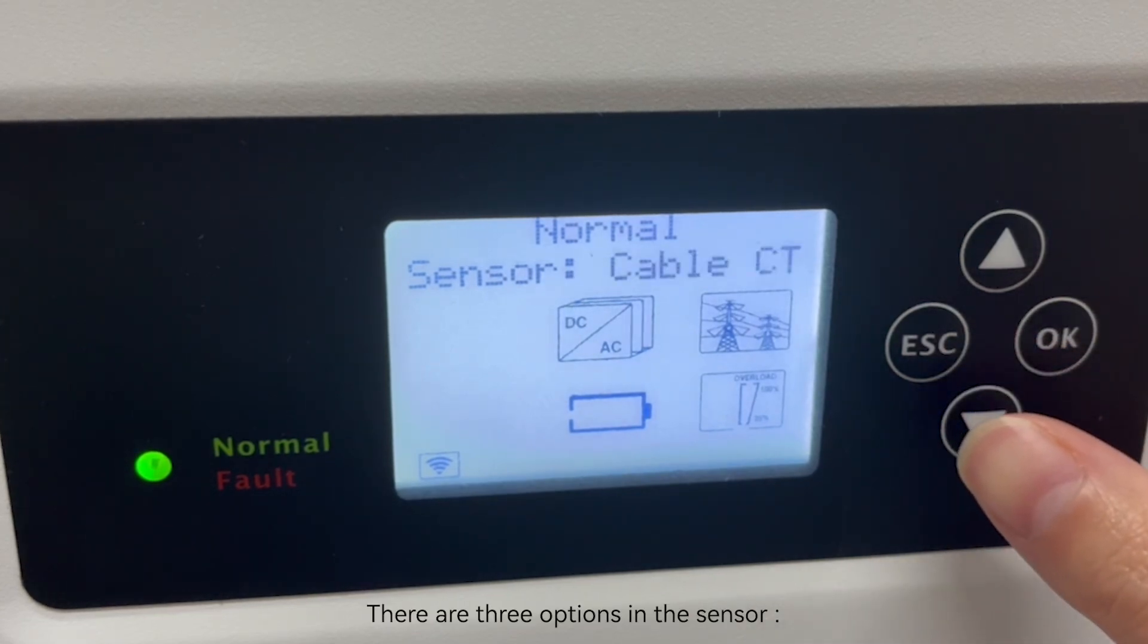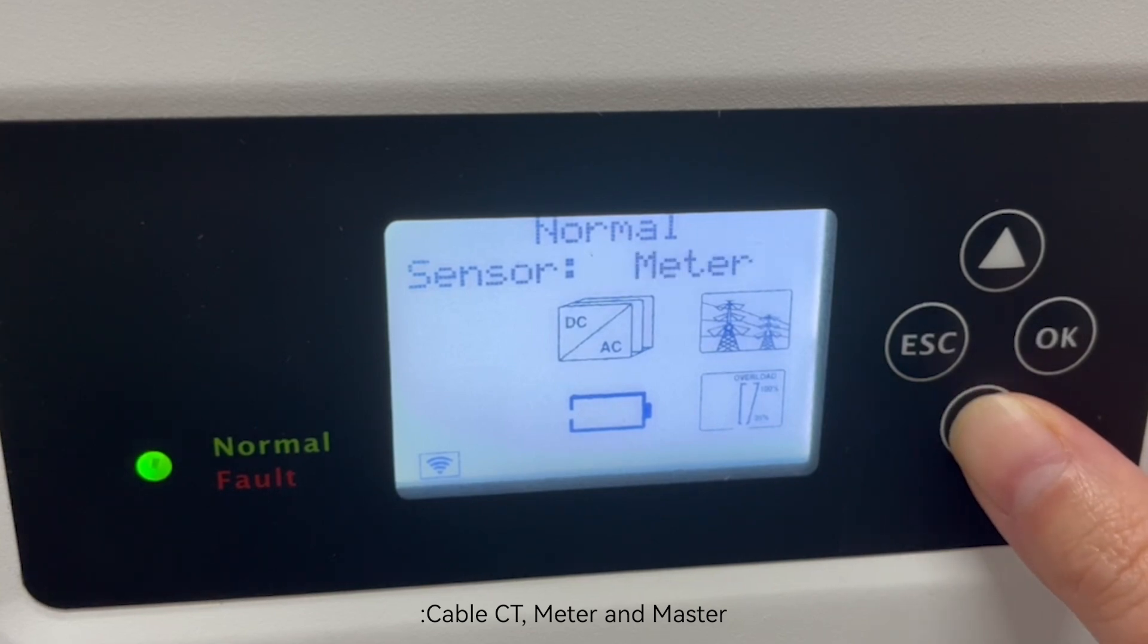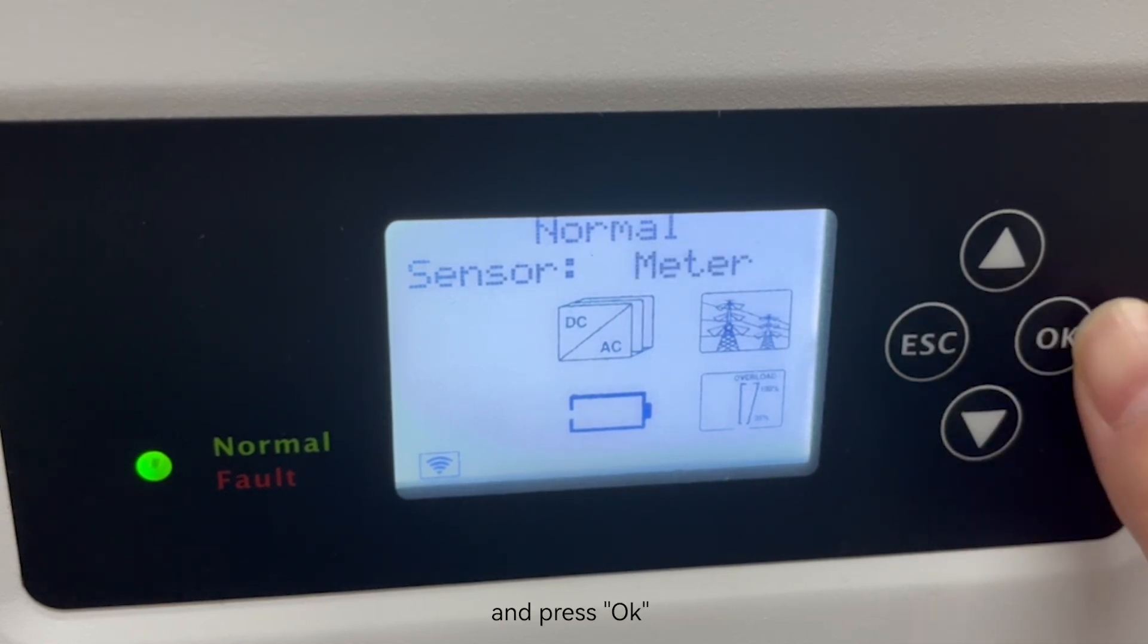There are 3 options in the sensor: capacity, meter, and master. Choose meter and press OK.